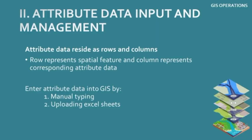The next GIS operation is attribute data input and management. Attribute data is considered as rows and columns — most usually it is an Excel sheet with rows as spatial data and columns as the attribute considered. For example, to add temperature of major cities in India, the rows will be the cities — Hyderabad, Mumbai, Kochi, Chennai, Kolkata, etc. — and the columns will be temperature values in degrees Celsius. You upload that data into the software, and on the particular spaces of cities you will identify the temperature. For entry, you can either type manually or upload Excel sheets.